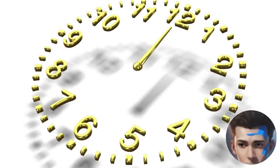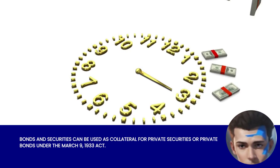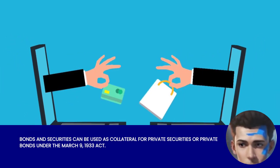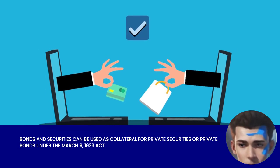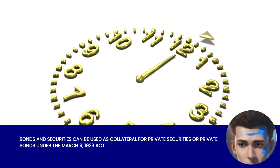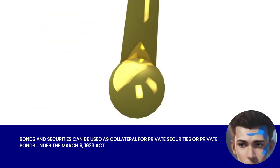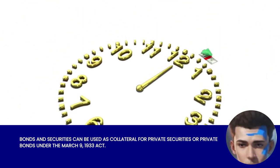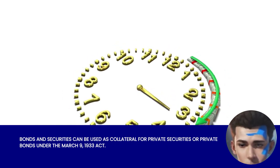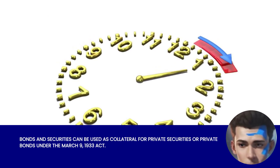You can use your business credit or your tax credit as collateral for private securities or private bonds when you operate under the March 9, 1933 Act, as such is included in what is known as eligible papers. Eligible papers under the March 9, 1933 Act are defined as any notes, which by definition includes bonds and securities. Here are five case citations that support the statement that bonds and securities are sometimes referred to as notes in the legal context.